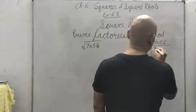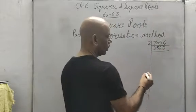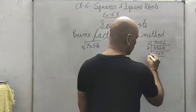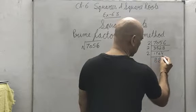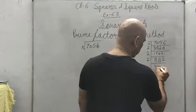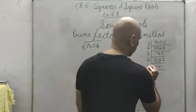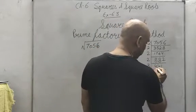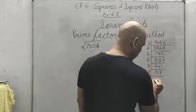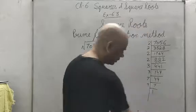Dividing 7056 by 2 repeatedly: 7056 ÷ 2 = 3528, ÷ 2 = 1764, ÷ 2 = 882, ÷ 2 = 441. Now 441 cannot be divided by 2 since it is odd. Checking divisibility by 3: 4+4+1 = 9, yes it can be divided by 3. So 441 ÷ 3 = 147, ÷ 3 = 49. And 49 is the square of 7.